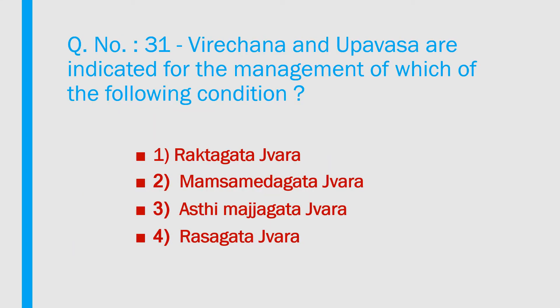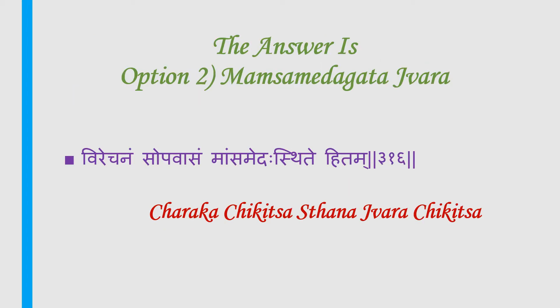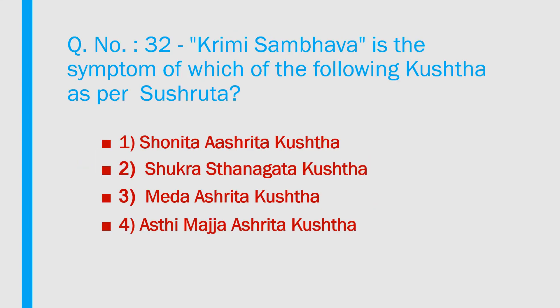Question number 31: Virechana and ubhaya vasa are indicated for the management of which of the following condition? 1) Rekta gada jvara, 2) Maansa medha gada jvara, 3) Asti madhja gada jvara, 4) Resa gada jvara. Answer is option 2 — Maansa medha gada jvara. Virechana and ubhaya vasa are indicated for maansa medha gada jvara. Reference: Charaka Chigilsa Sthana, Jvara chigilsa.